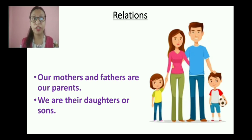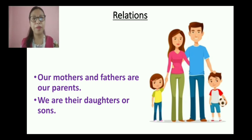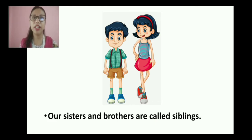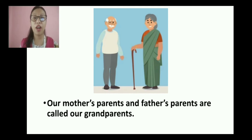Then we have talked about the relations — how are the relations between our family members. Our mother and father are our parents, so we call them together as parents. We are their daughters or sons. The parents have their children — the girl is called the daughter and the boy is called the son. Our sisters and brothers are called siblings; together your sister and your brother form the siblings. Then we have our mother's parents or our father's parents, whom we call grandmother and grandfather, and together we call them grandparents.